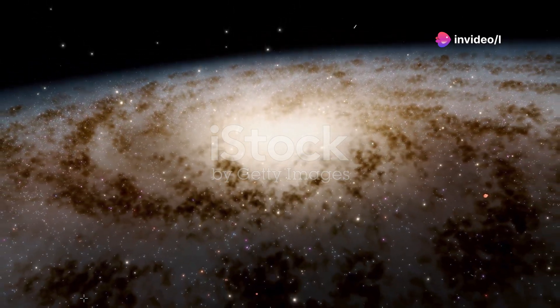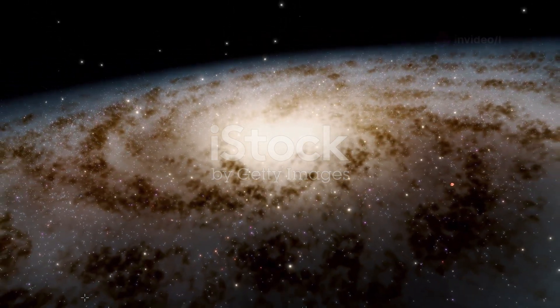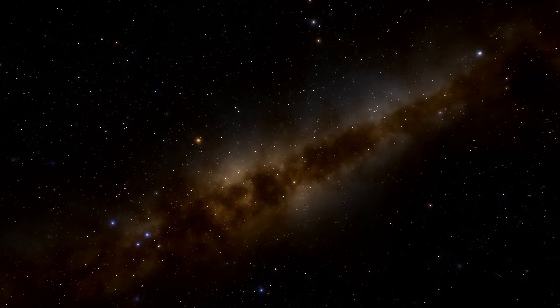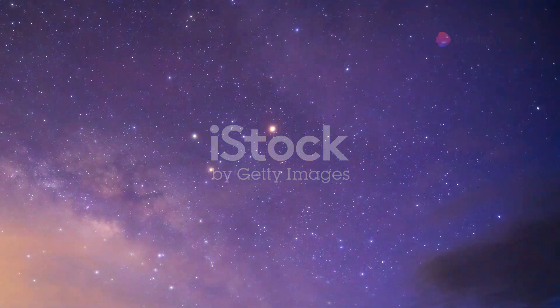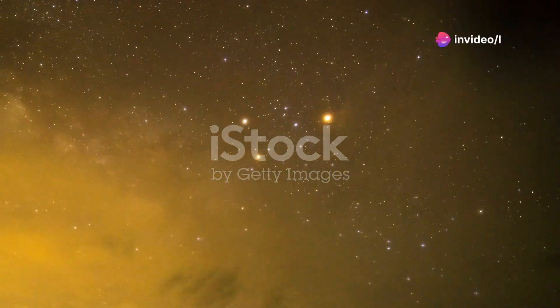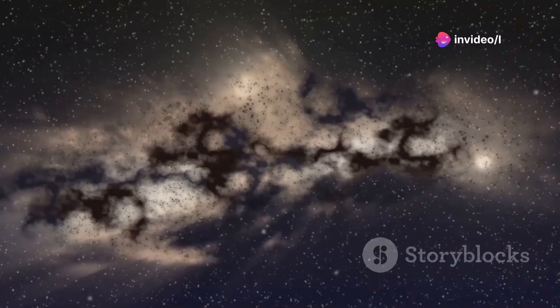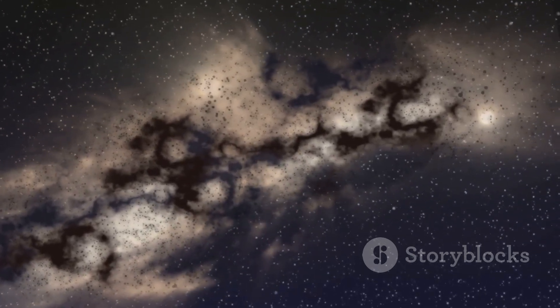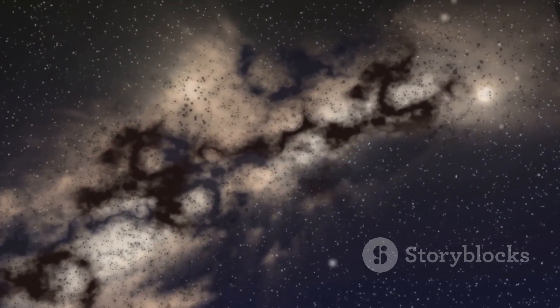Our solar system resides within the Milky Way galaxy, a barred spiral galaxy with an estimated 100 to 400 billion stars. From our vantage point within one of its spiral arms, we can observe its diffuse band of light stretching across the night sky. This band, the Milky Way, is composed of countless stars, too faint to be seen individually with the naked eye.